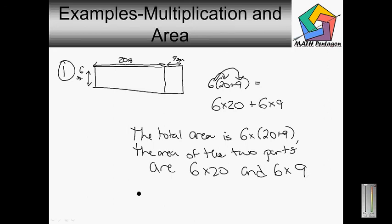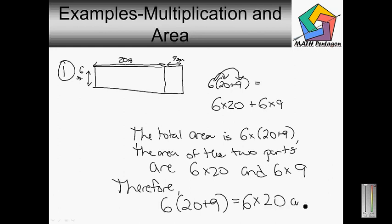Therefore, 6 times 20 plus 9, parenthesis equals 6 times 20 and 6 times 9.